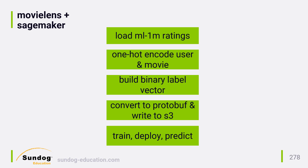We also need a vector of labels to train with, indicating whether this specific rating for a given user-movie pair indicated that the user liked the movie or not. Somewhat arbitrarily, we'll say any rating of 4 or higher gets a label of 1, and 3 or below gets a 0. The algorithm just works best with binary values like this. Once we have our sparse ratings vectors and label vectors ready for both our training and test datasets, we convert them to the ProtoBuf format SageMaker expects and write them to S3, where SageMaker can access them.